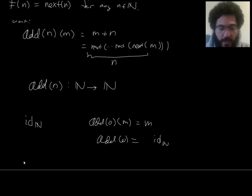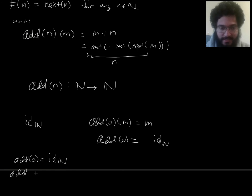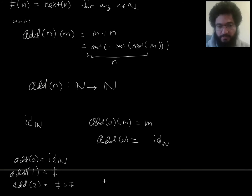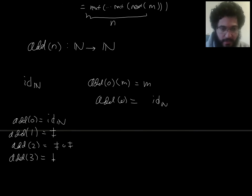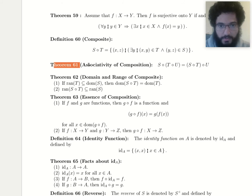We can start building up a pattern — it's a recursive pattern. Add zero is the identity; that's how you add zero to things, applying next zero times. Next something one time is the next function we defined. What does it mean to next something two times? If you compose the next function with itself, that's add two — applying it to something nexts the thing and then nexts it again. Add three will be the next function composed with itself composed with itself, and so on.